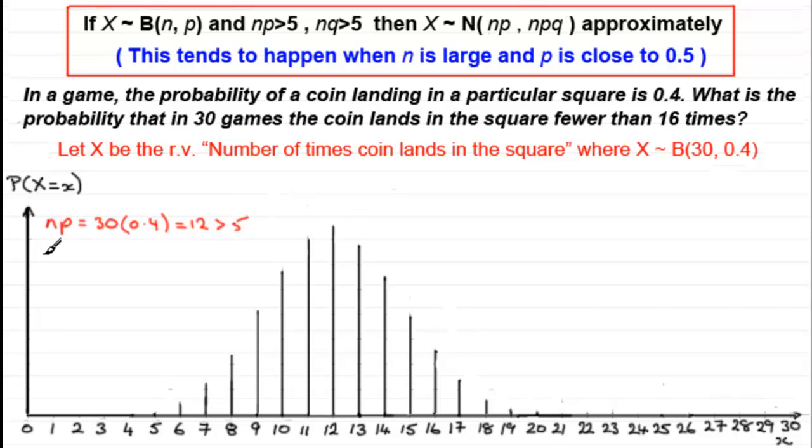Nq, let's just work that out. Nq, q is 1 minus p, so q is going to be equal to 0.6. So that's 30 multiplied by 0.6. And that gives us 18, which again is clearly greater than 5. So with this general rule of thumb, we can see that we can approximate this to a normal distribution.